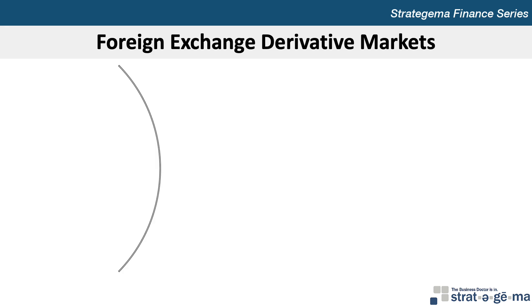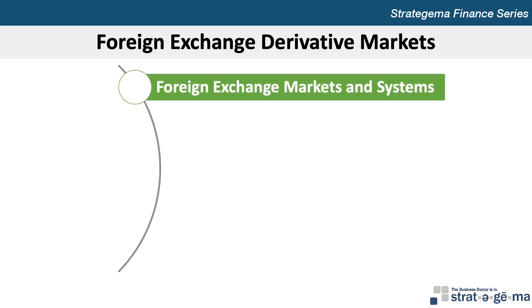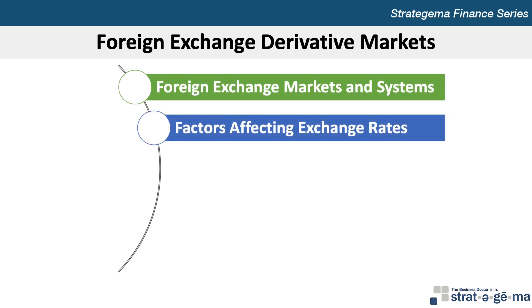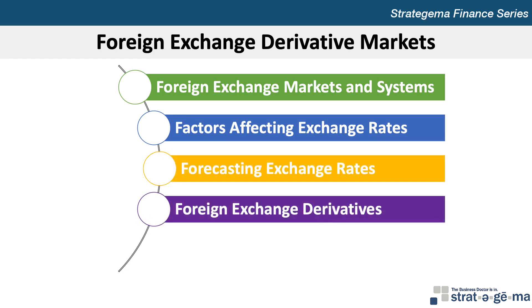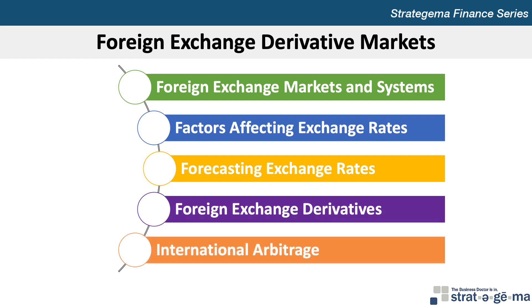Chapter 16 includes five key learning objectives. First, to provide a background on foreign exchange markets. Second, to explain how various factors affect exchange rates. Third, to explain how to forecast exchange rates. Fourth, to describe the use of foreign exchange rate derivatives. And fifth, to explain international arbitrage.